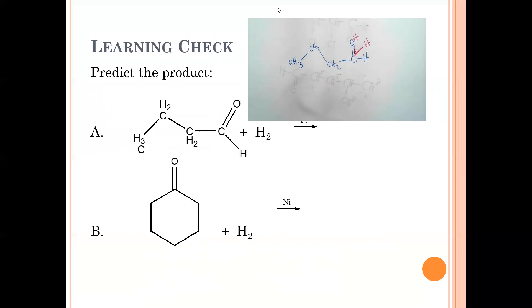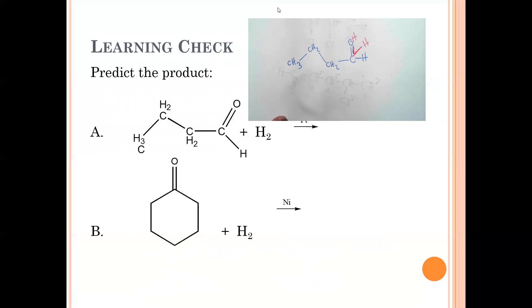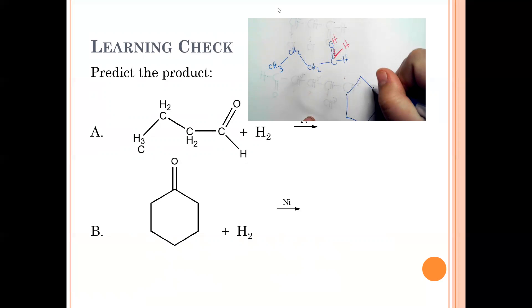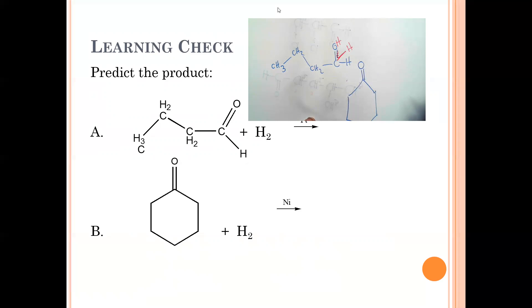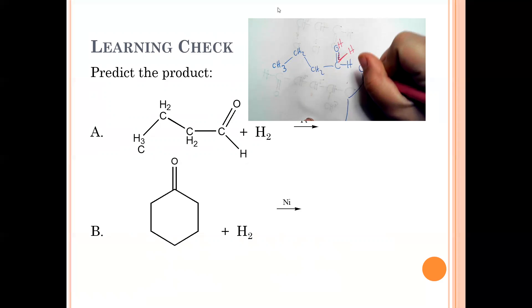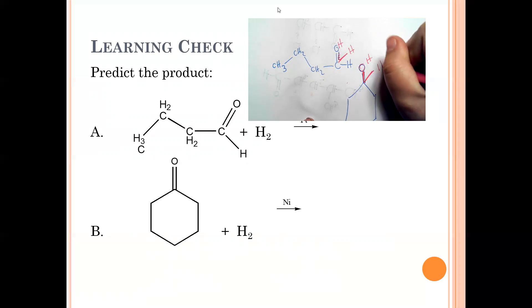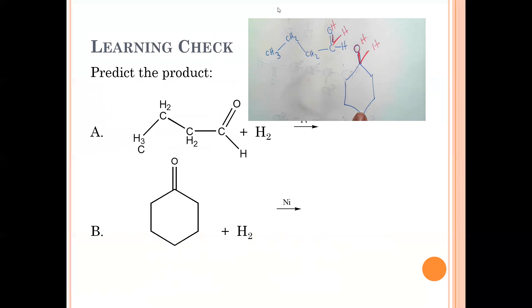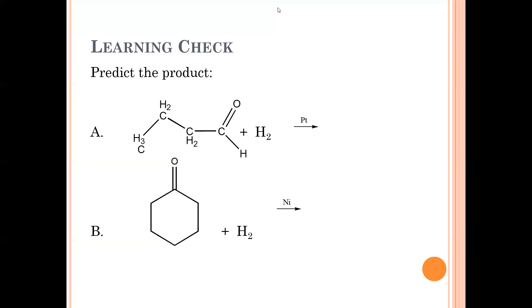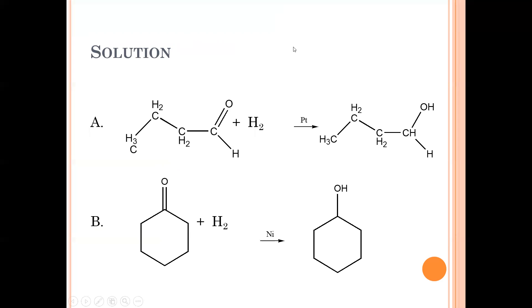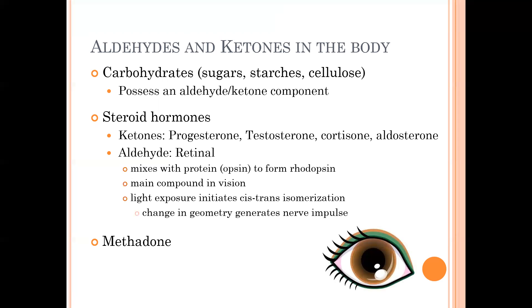An aldehyde, when reduced, forms a primary alcohol. For example, the aldehyde in our chain (CH3-CH2-CH2-CHO) opens up — one H goes to O, one to C — forming 1-butanol. For a ketone like cyclohexanone, the double bond opens and we get an OH and H added, forming cyclohexanol. Reduction is just undoing the oxidation — it's the reverse process.